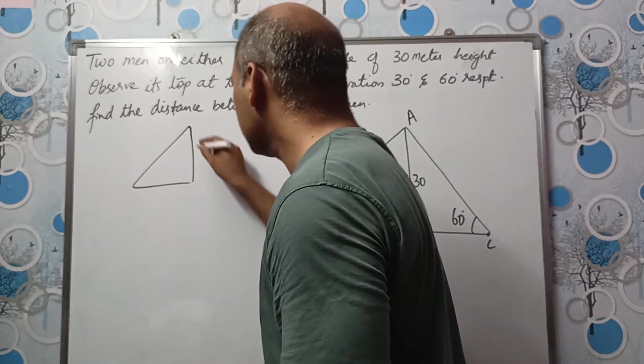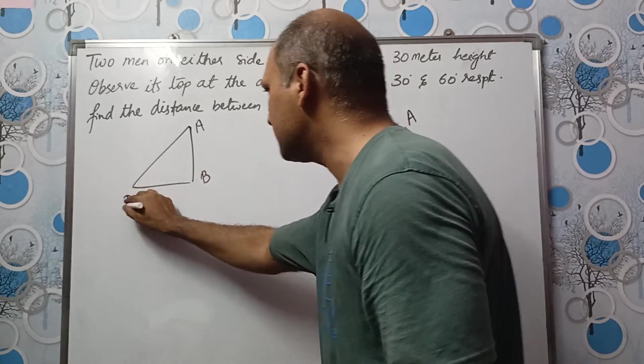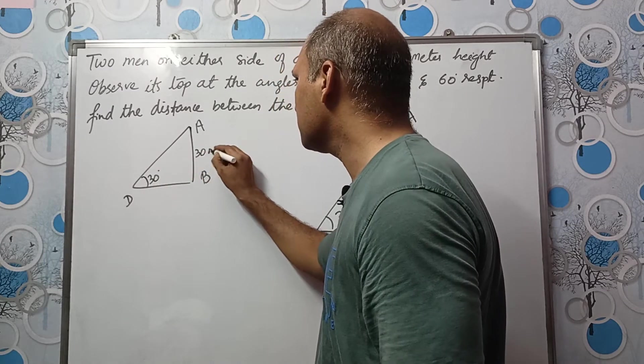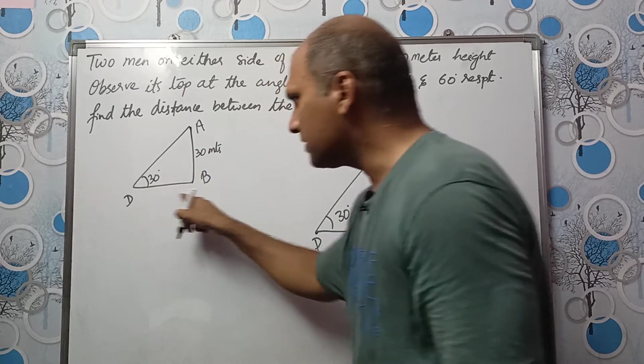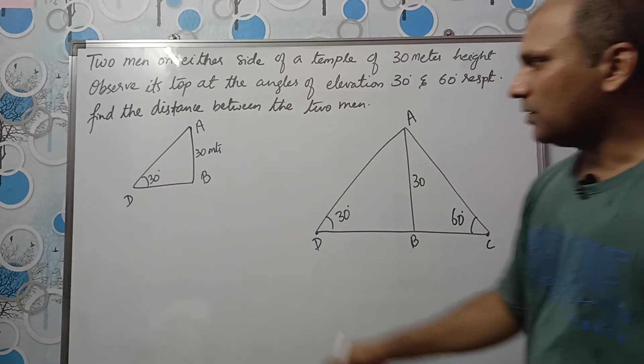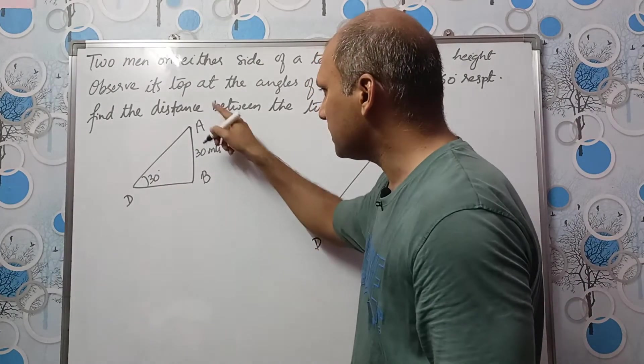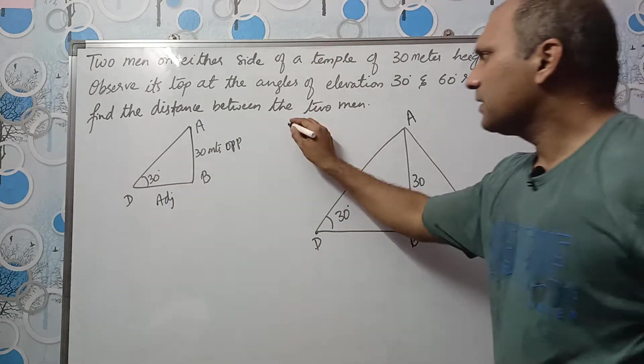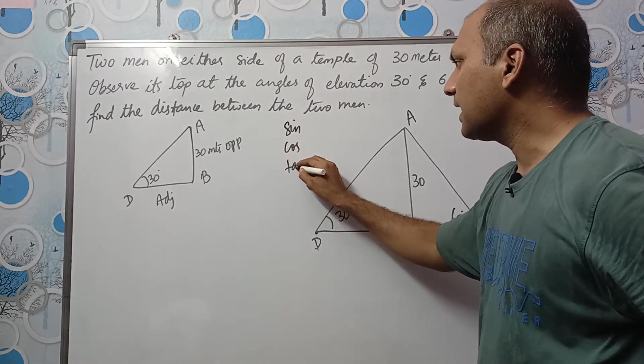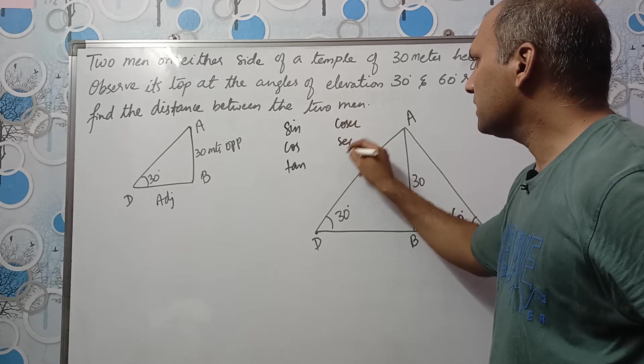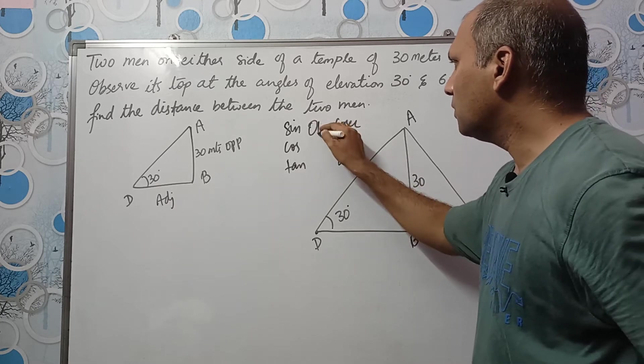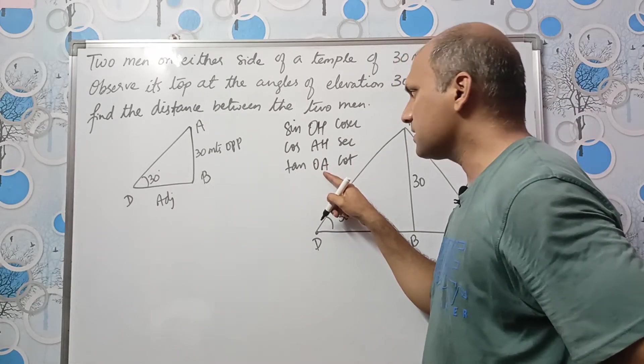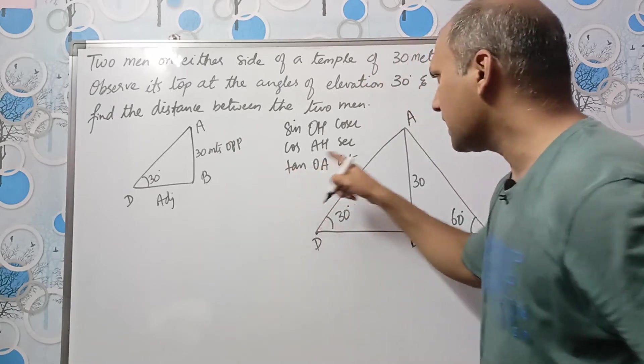Let us take first triangle ABD. We took this triangle first and the angle is 30 degrees and this is 30 meters given. We need to find DB. So angle is here which means this is the opposite side, AB is opposite, adjacent will be DB. So opposite and adjacent is in tan. See sin cos tan, cosecant secant cot, old hero and his old acting. So tan is opposite divided by adjacent.